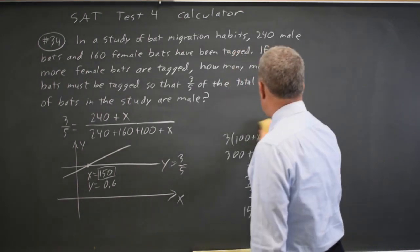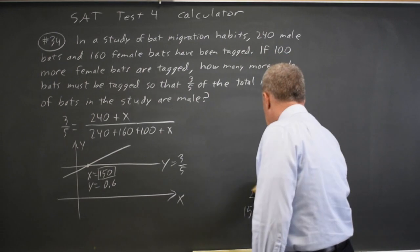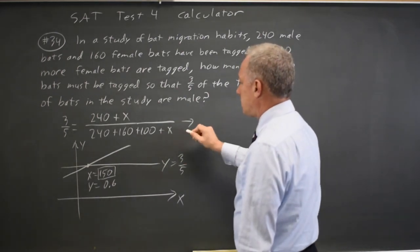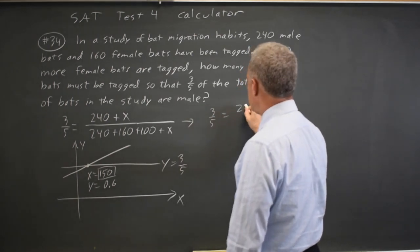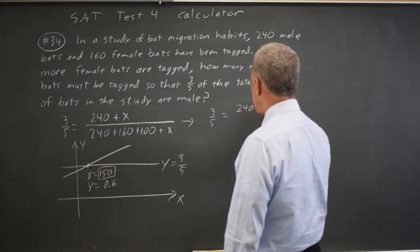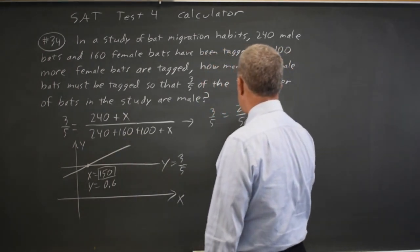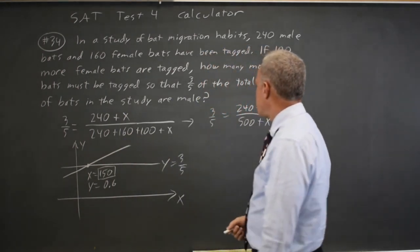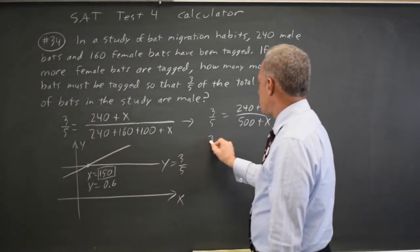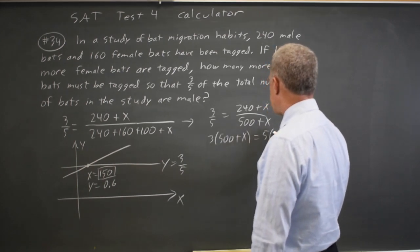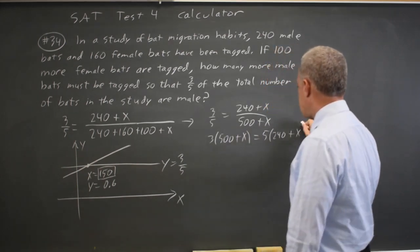Or I could solve the equation here algebraically instead of on the calculator. I'm going to write it as three-fifths equals 240 plus x over 400 plus 100 is 500, 500 plus x. And this is almost the same thing I just did.